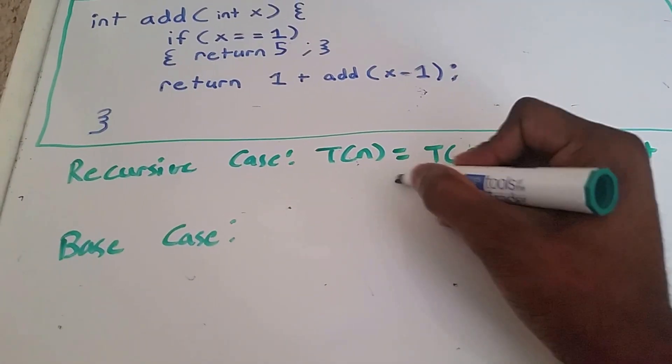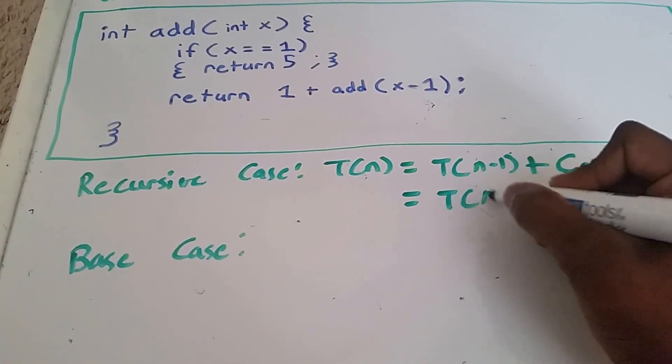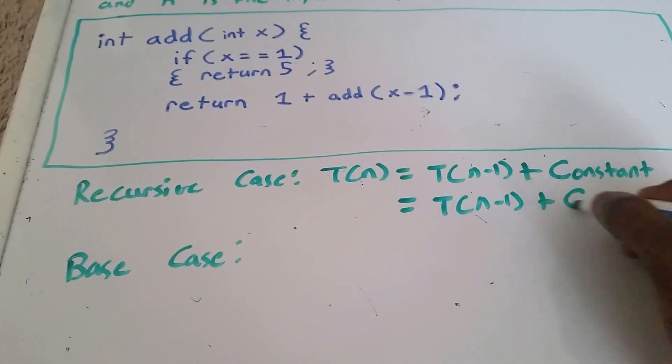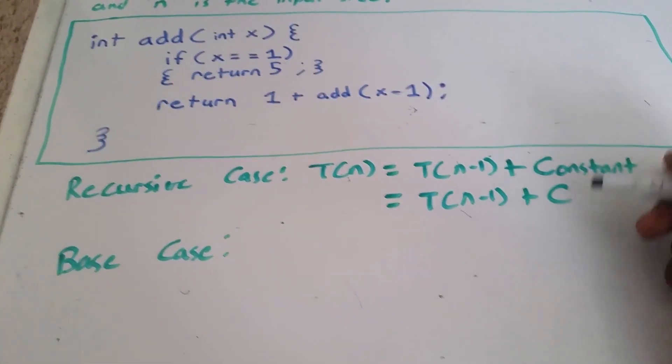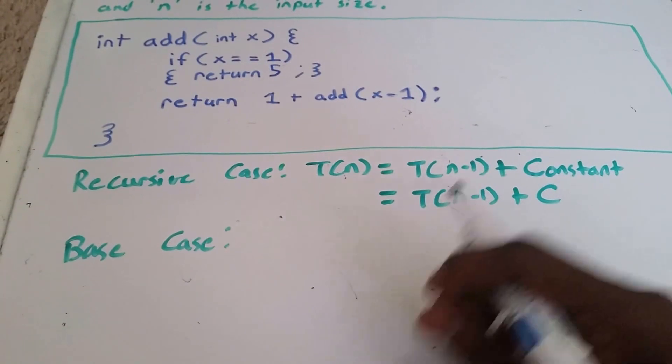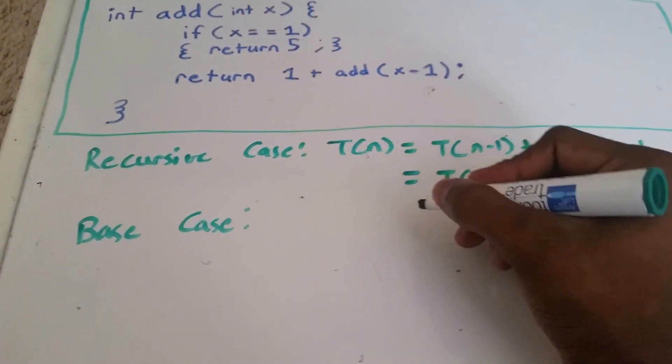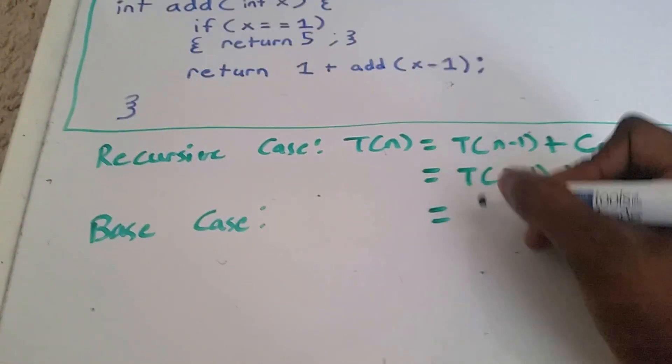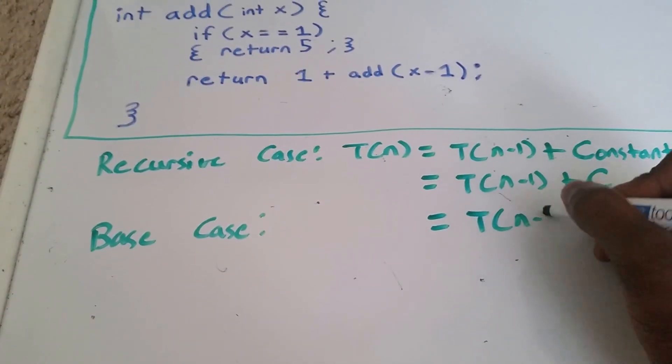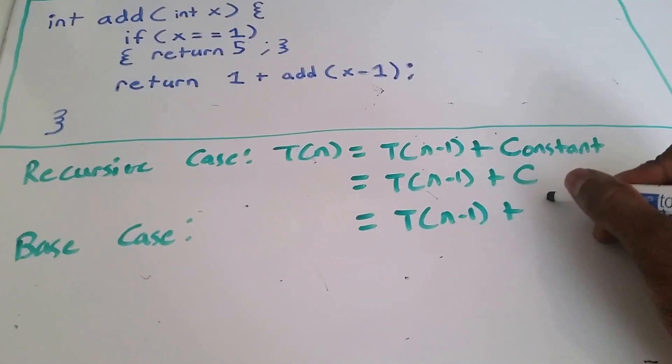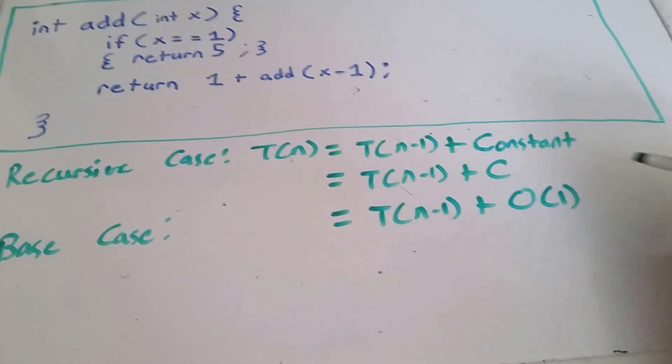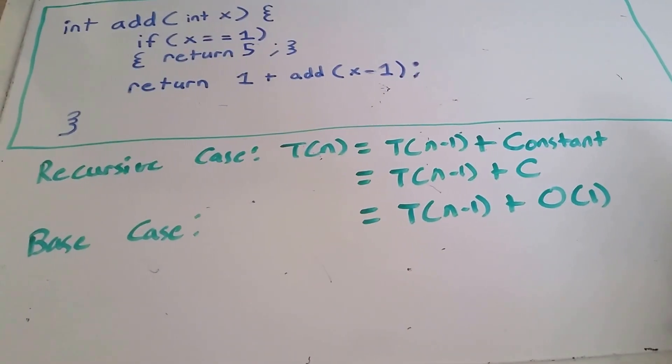And now if we rewrite this again, we get T(n minus 1) plus C, and C stands for constant. Now you can also sometimes see people will write something like T(n minus 1) plus big O of 1. Big O of 1 just stands for constant time.